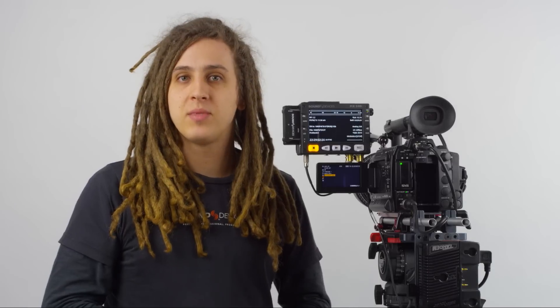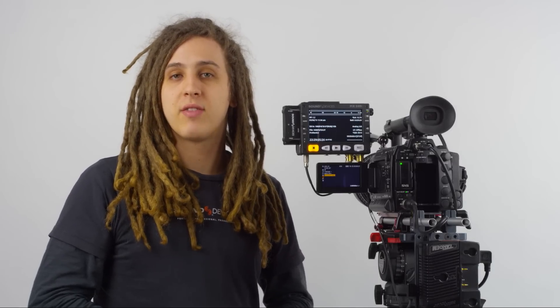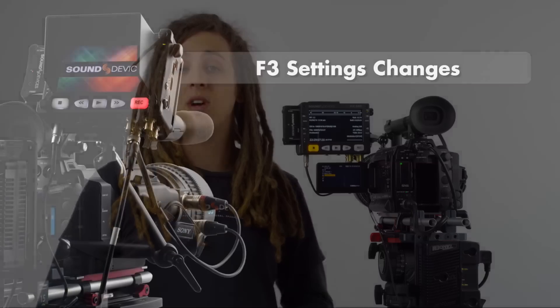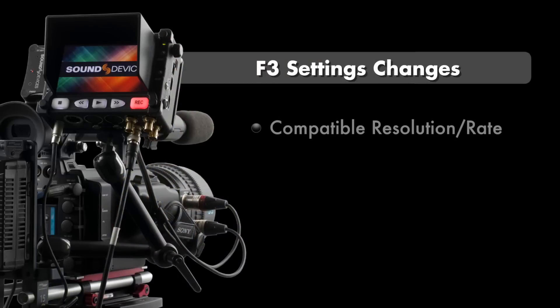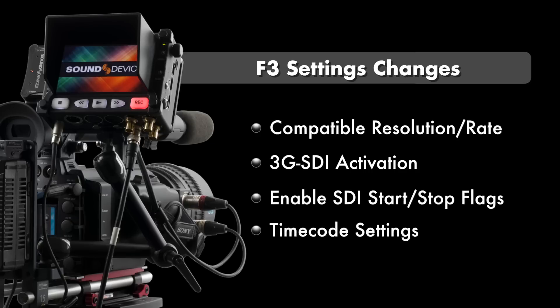That pretty much sums up the internal settings we need to change within the F3 from defaults. We've changed the internal record resolution rate to a compatible rate that can be sent to the 3G SDI output, turned on the 3G SDI output, enabled record start/stop flags, and manipulated our timecode to match our production requirements.